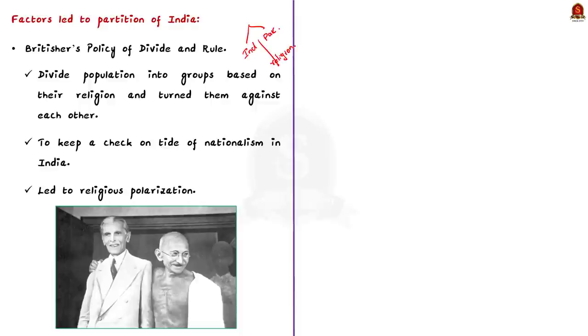A lot of factors led to the partition of colonial India. The first such factor was the British government's policy of divide and rule. Basically, the approach under the policy is to divide Indian population into groups based on their religion and turn them against each other. The British government used the policy to keep a check on the tide of nationalism in India. But unfortunately, the approach led to religious polarization between Hindus and Muslims. This in turn fueled the demand for separate nationhood. This is the first and the most prominent reason that led to the partition of India.